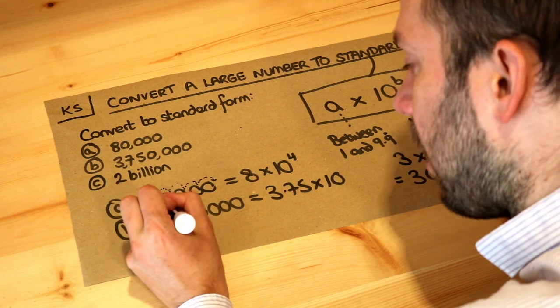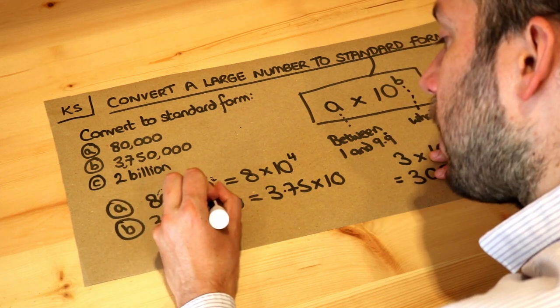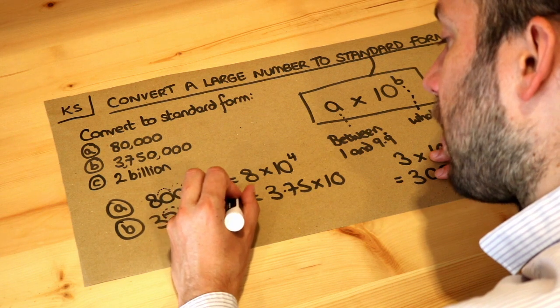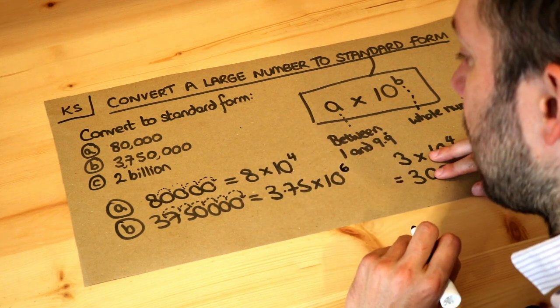Well, the decimal point is here at 3.75. You've got to move it 1, 2, 3, 4, 5, and then 6 places until you get to the number that's here, so it's times 10 to the power of 6.